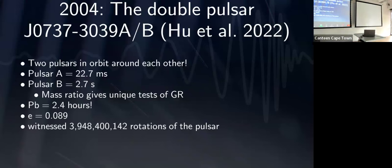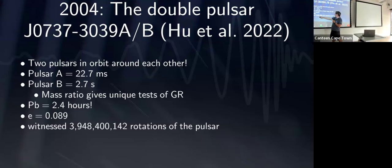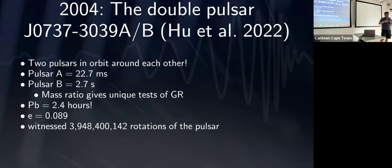The southern hemisphere has its own neutron star system where two neutron stars go around each other, and Hu Chen, sitting over at UCT today, has been studying this system. It has two pulsars — one rotating every 2.7 seconds, one spinning a hundred times faster — going around each other every 2.4 hours, making it much more relativistic than the Nobel Prize-winning system. We've been watching this system with MeerKAT for about four years and have witnessed exactly three billion nine hundred and forty-eight million four hundred thousand one hundred and forty-two rotations of the fast pulsar — and we know the pulse arrival time to better than one part in a thousand.